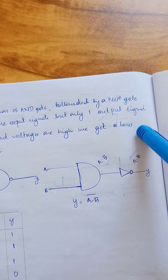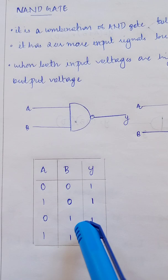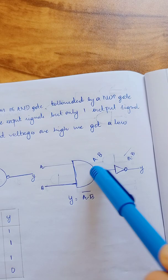When A is 0 and B is 1, A dot B will be 0. A dot B whole bar means the output voltage will be 1.